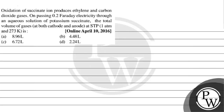Hello, let's read this question. The question says oxidation of succinate ion produces ethylene and carbon dioxide gases. On passing 0.2 Faraday of electricity through an aqueous solution of potassium succinate, the total volume of gases at both anode and cathode at STP (1 atm and 273 Kelvin temperature) is: